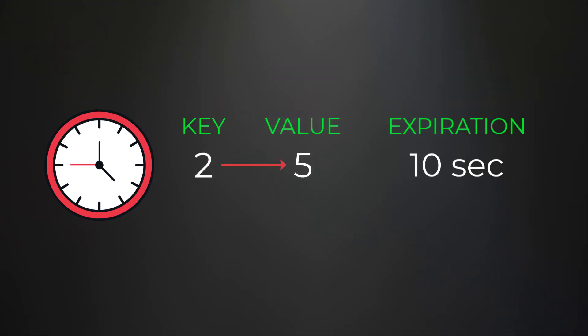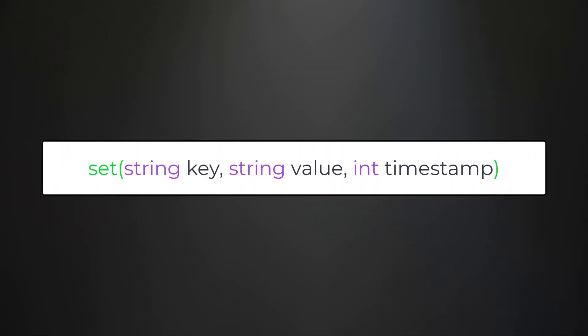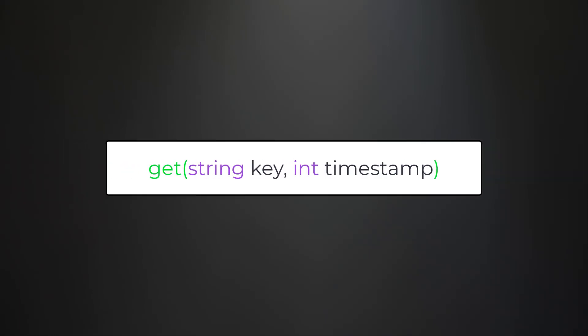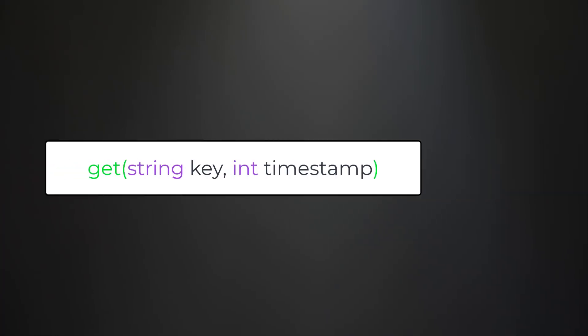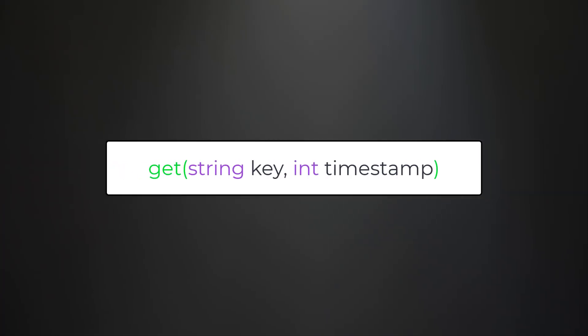For this problem we need to design a time-based key-value store that implements two operations. The first is a set function where we pass in a key, a value, and a timestamp. The second operation is a get function which has two parameters: key and timestamp. The set operation stores a key, value, and timestamp together. The get function returns the value of the key that has a timestamp less than or equal to the given timestamp.